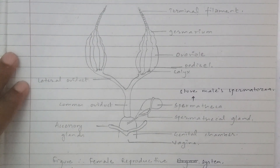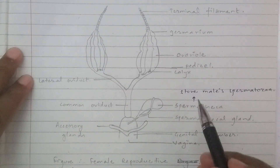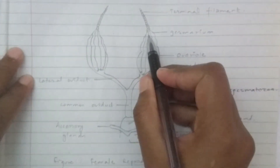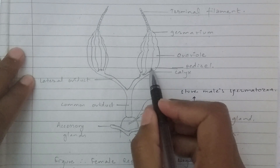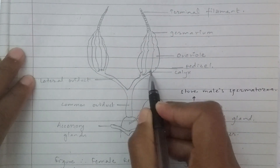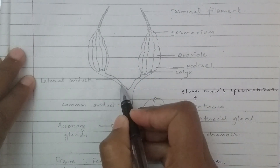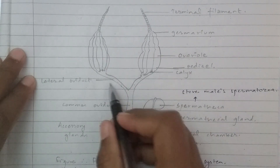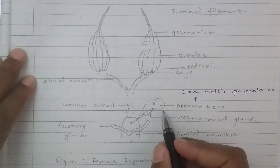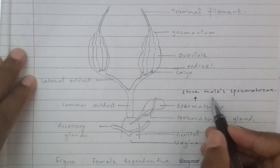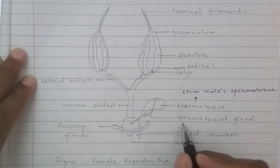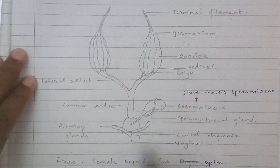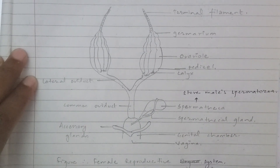The female reproductive system of insects. We have to add this diagram. This is the terminal filament. This portion is the ovariole. The fat portion is the germarium. This is the calyx. This tube-like structure is the lateral oviduct. The lateral oviducts fuse to form the common oviduct. This is the spermatheca, whose function is to store male spermatozoa. This is the spermathecal gland, which is a tube-like structure. This is the accessory gland and the genital chamber. This is the female reproductive system of insects.